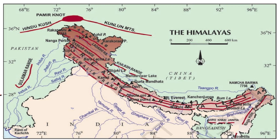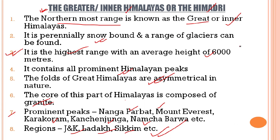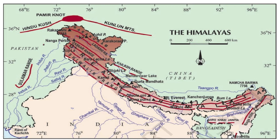Now we will try to broaden our understanding of the Greater Himalayas with the help of a map, putting all the characteristics — especially those of the peaks and the regions occupied by this mountain range — together. We have already seen that these rise up to a height of 6000 meters. The most important concepts here in the context of map work are the prominent peaks and the regions covered by this mountain range.